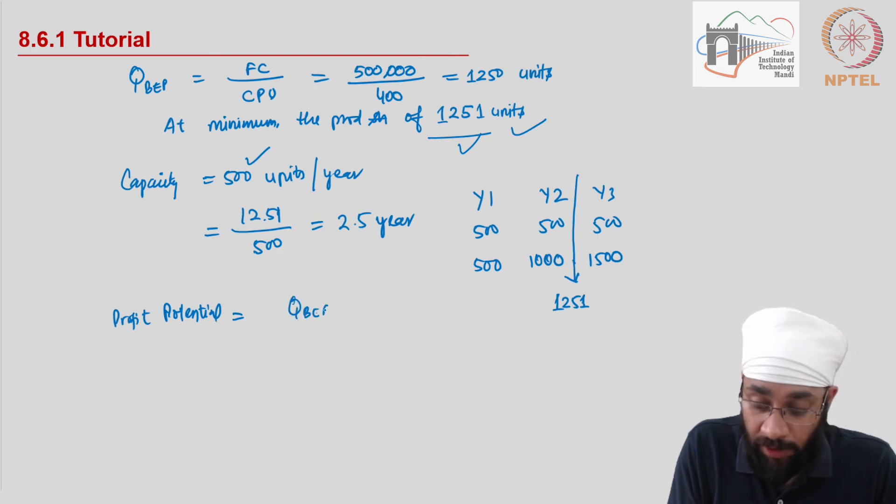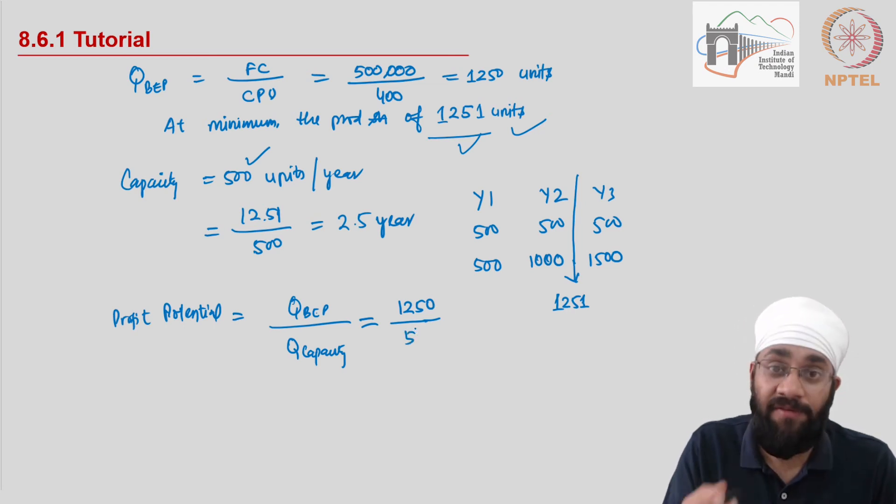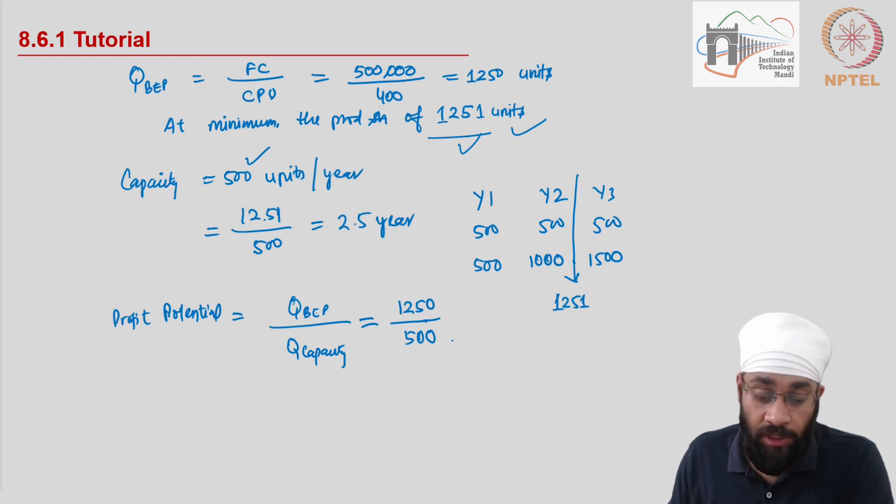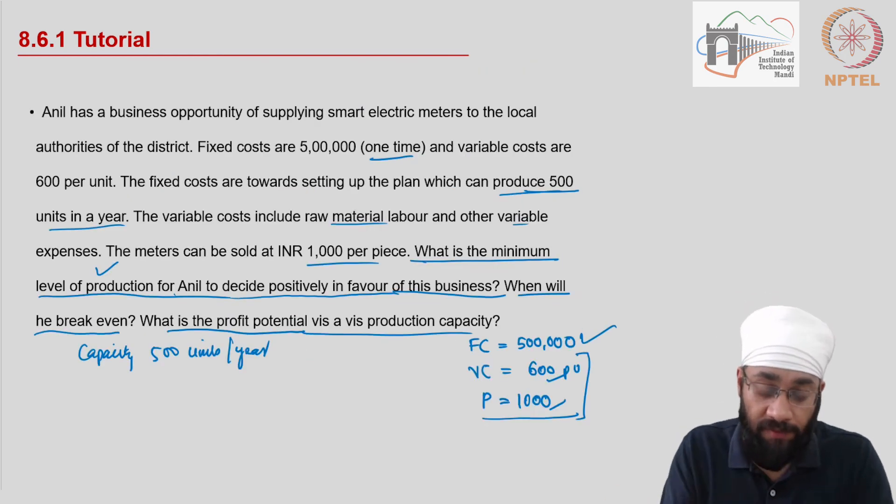Now I want to take the quantity of break-even point and I want to take quantity at the maximum capacity and I want to say at what percentage capacity. So 1,250 is my break-even capacity, break-even level, and the total capacity is 500 per year. So 500 per year, meaning how long can you go on? That's also another question.